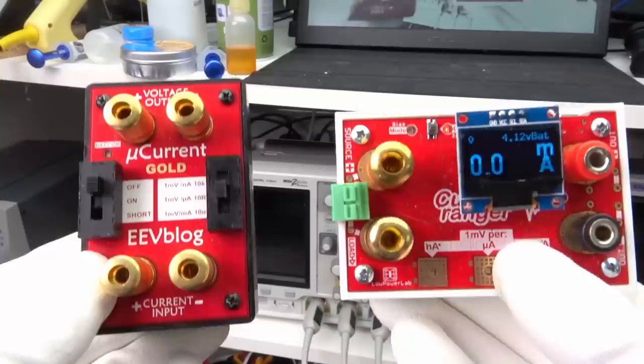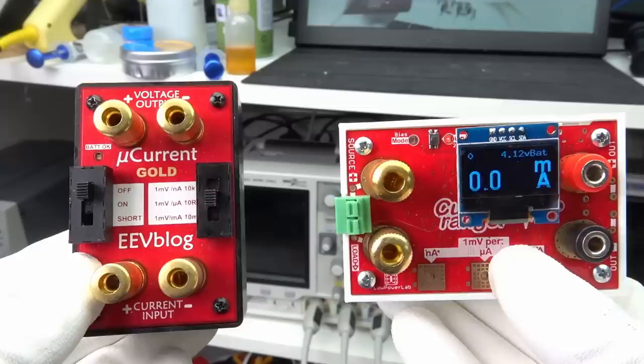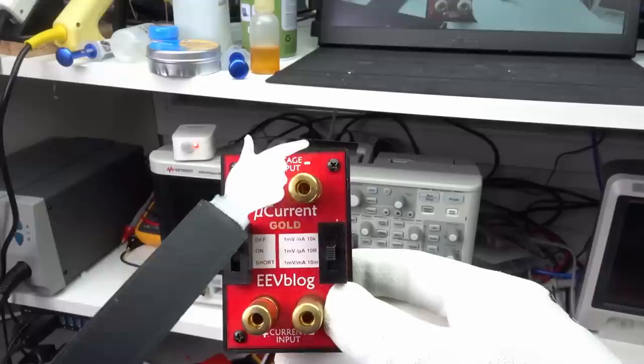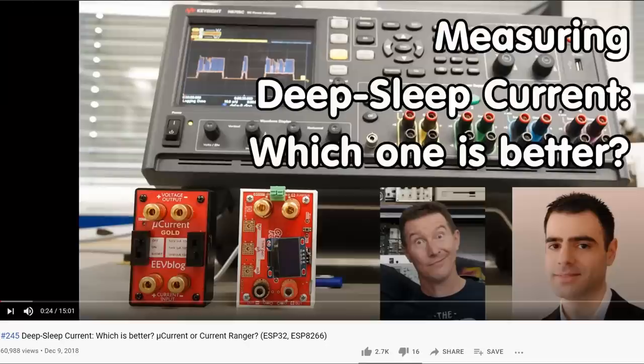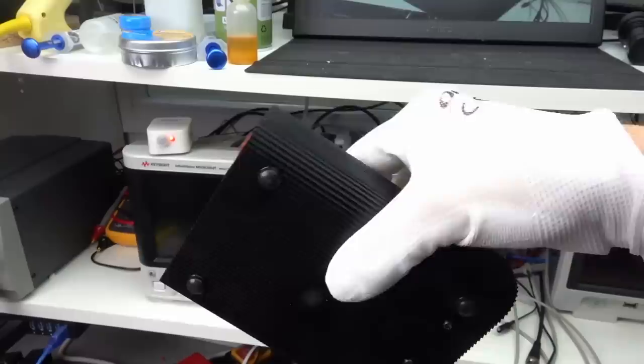This is precisely what Dave Jones from EEVBlog and Felix Rusu from Low Power Labs were thinking when they built these small devices. They use much lower resistor values to create a much smaller burden voltage and include an amplifier. Both sell around $100, including shipping. And both have an output for a voltmeter or an oscilloscope. The current ranger has an optional OLED display. If you are interested in how they work, you can watch video number 245.